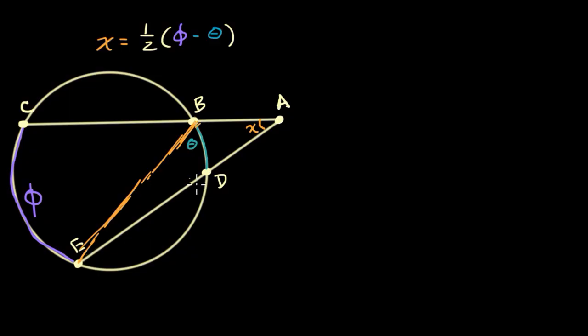We have this angle BED. It intersects, it's an inscribed angle, and it intersects this arc of measure theta. We know an inscribed angle has half the measure of the arc that it intersects. So this is going to have a measure of theta over two. I know that's a little bit hard to see.